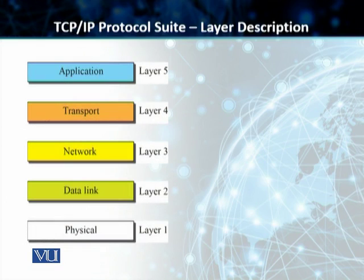Students, on the slide you can see the five layers of a TCP/IP protocol suite, layer one all the way to layer five. We'll start with the application layer. In the application layer, we have seen that there is a logical connection — an imaginary connection — between the application layers at the two ends, at the source and the destination.